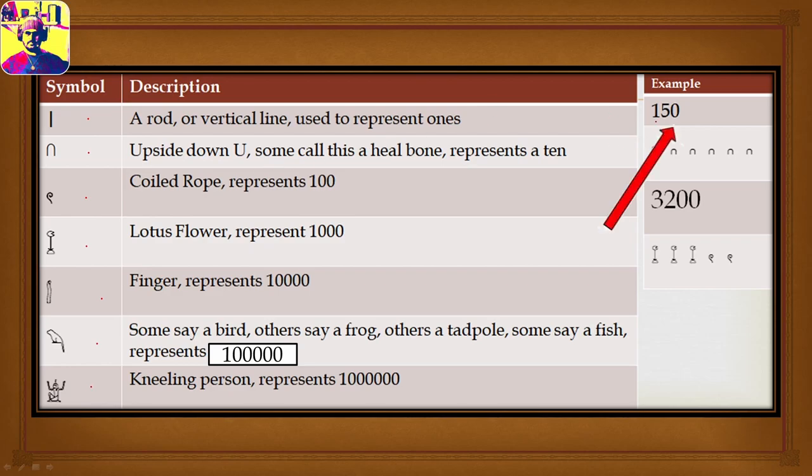If we wanted to represent the number 150, we would break this down into its components: 100s, 10s, and units. Looking at the number of 100s, we only have one 100, which is represented by a coil of rope. Then we look at 50, which takes five 10s. One 10 is represented as a heel bone, therefore we have five of those. So we're looking at one coil of rope and one, two, three, four, five heel bones.